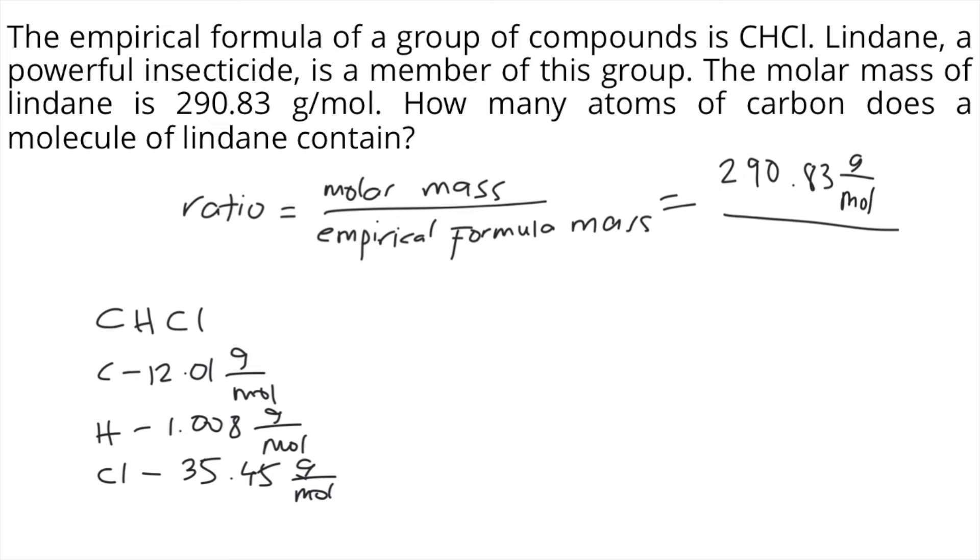So if you get the total - 12.01 plus 1.008 plus 35.45 - the empirical formula mass is 48.468 grams per mole. You plug that into the formula: 48.468 grams per mole.